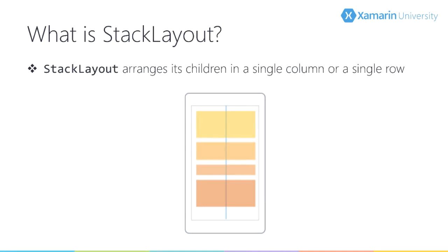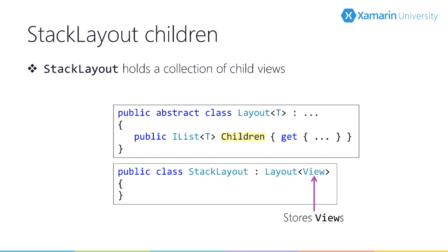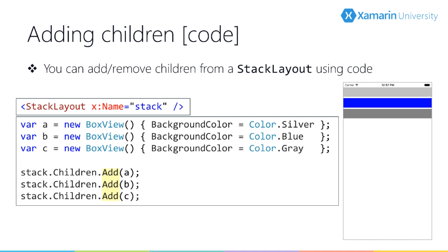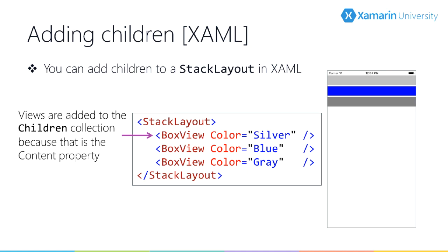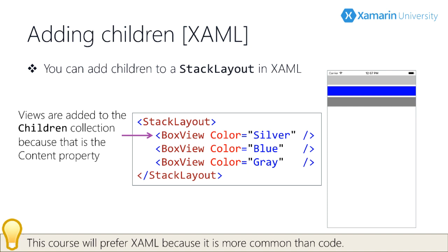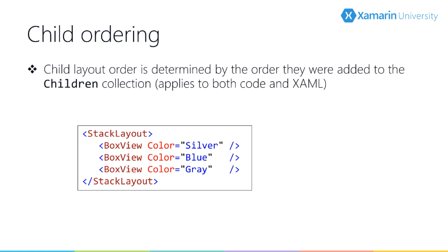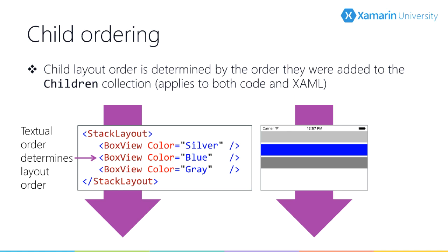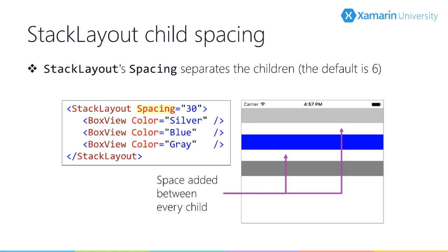Stack layout arranges its children in either a single column or a single row. It has a collection of children that inherits from its base class layout, constrained to be view. If you need to build your UI dynamically, you can work with the children collection from code — it's an IList with an add method. You can also add children in XAML; the children collection is the content property for layouts, so children nested inside a panel automatically get added. The order you list children determines the order they get laid out. You can set the spacing property — the default is 6 — and choose between vertical or horizontal orientation.